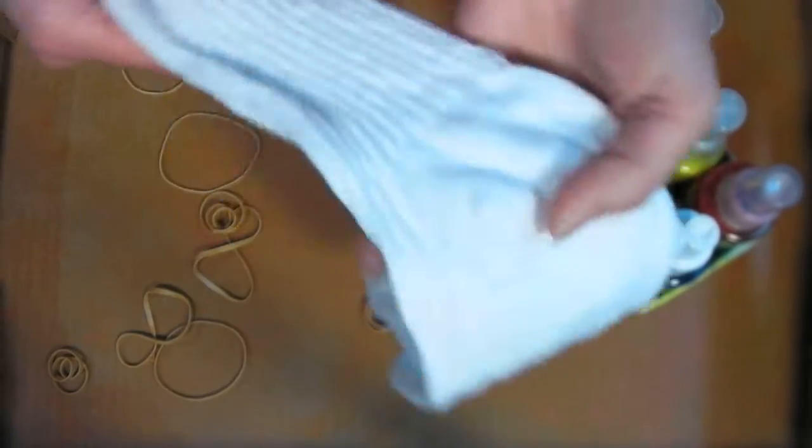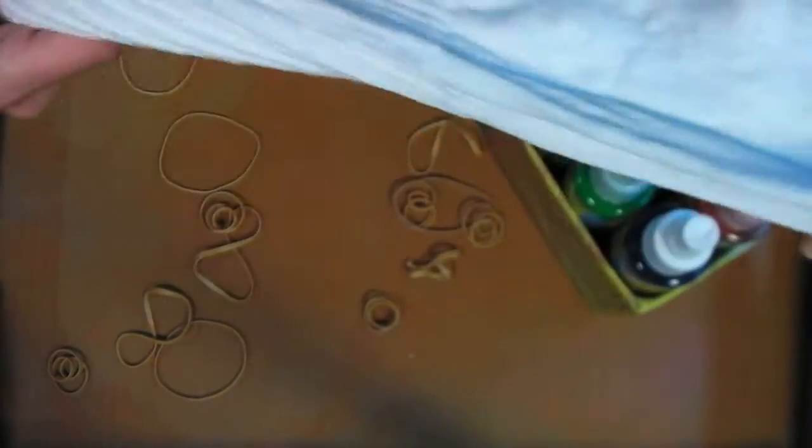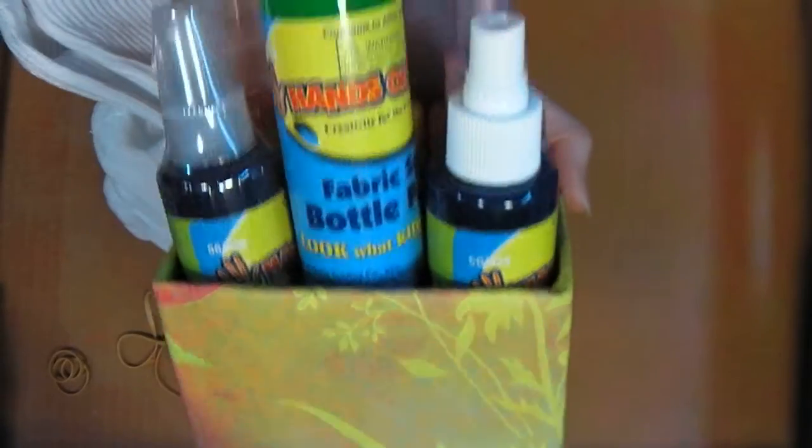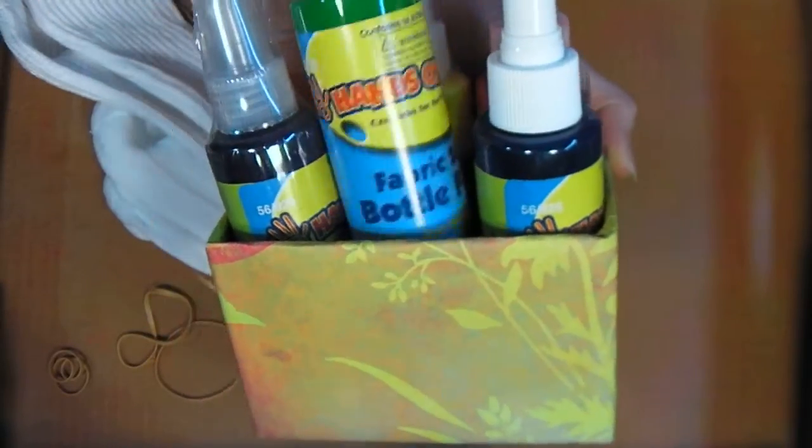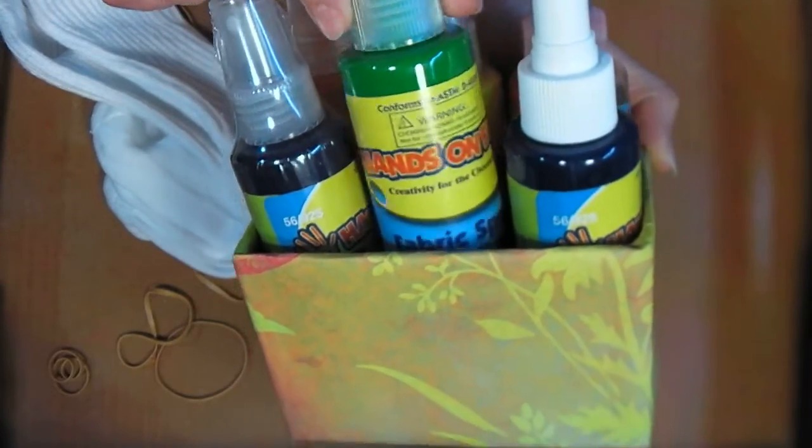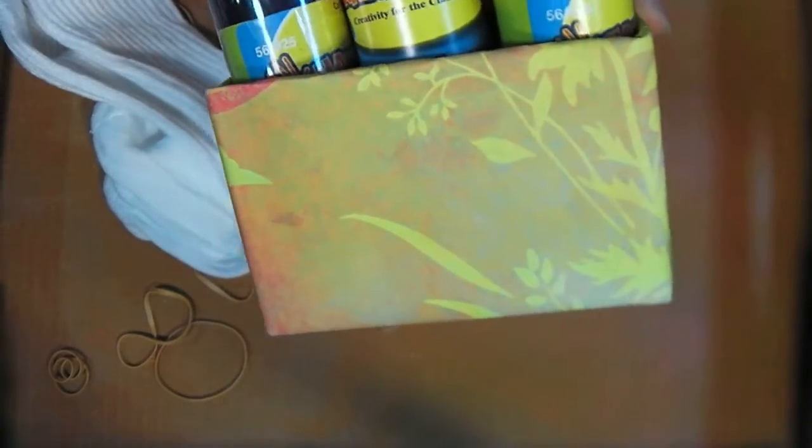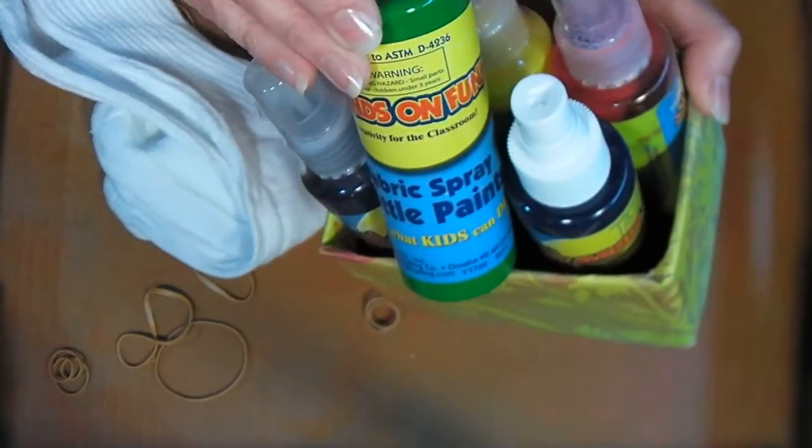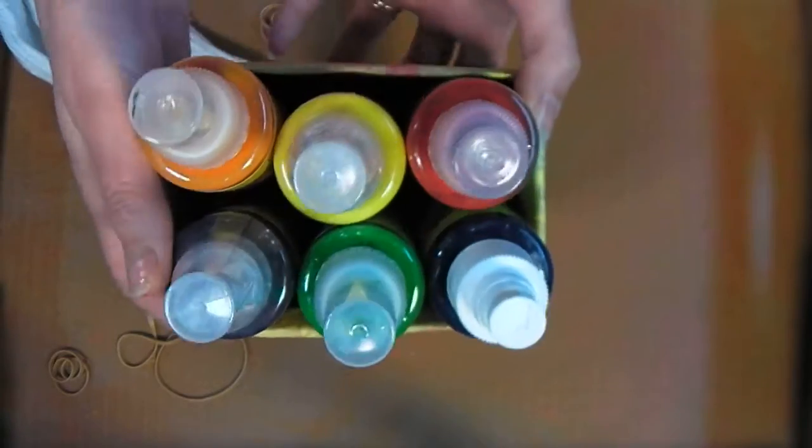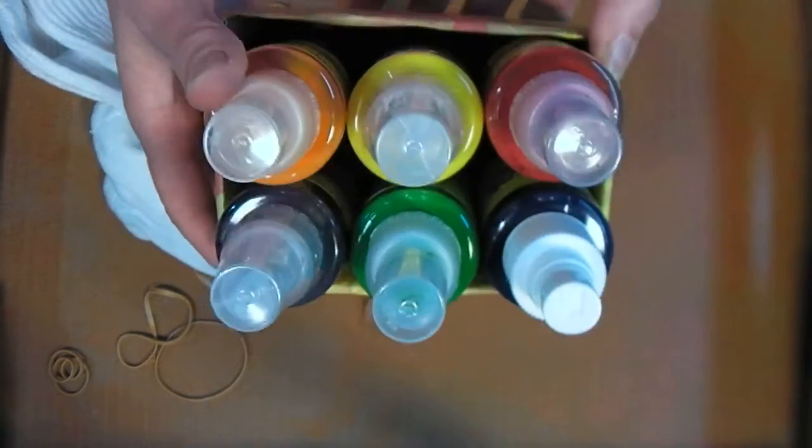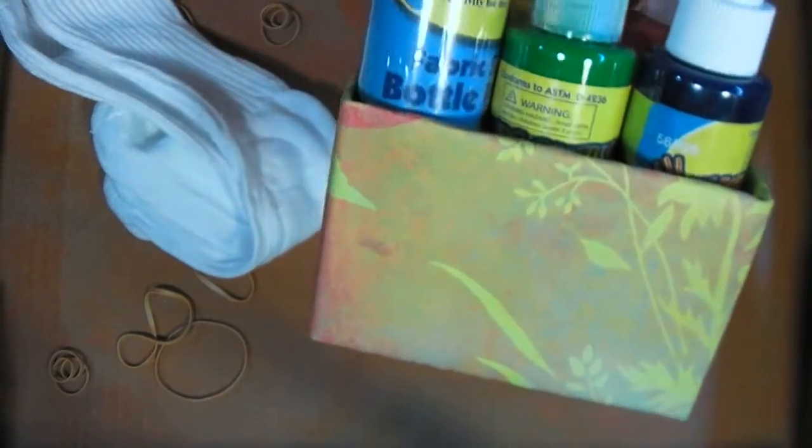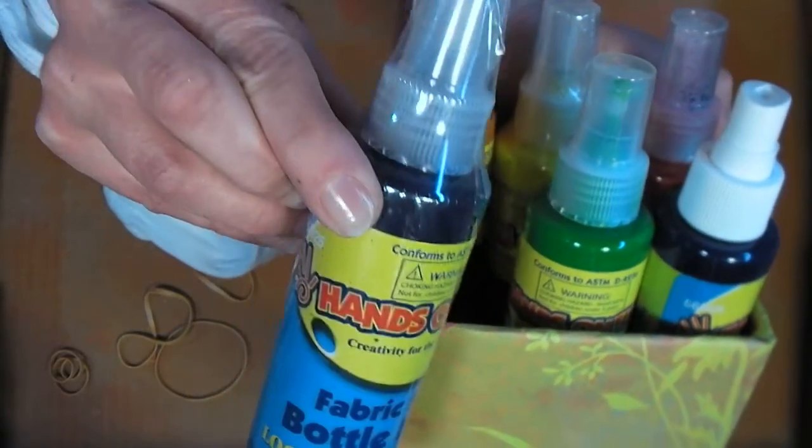So what I started with was white crew boys socks, or you could get men's socks, but you want to get the crew kind because they're longer. You need some spray fabric paint. You can make your own by mixing acrylic paint, like the craft acrylic paint that comes in a bottle with water and a spray bottle, or this set of six was eight bucks at Oriental Trading, and it works really well. By the time you buy the spray bottles and the paint, I think it's gonna cost you more to make your own, so I like this Oriental Trading spray fabric paint.